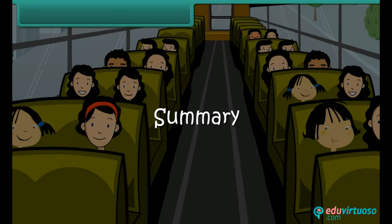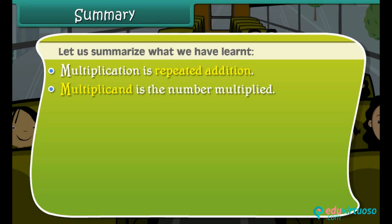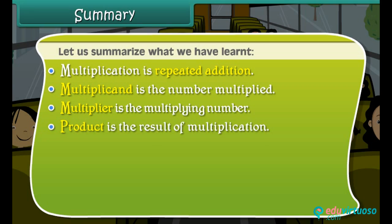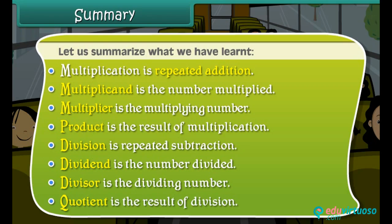Let us summarise what we have learnt. Multiplication is repeated addition. Multiplicand is the number multiplied, multiplier is the multiplying number, and product is the result of multiplication. Division is repeated subtraction. Dividend is the number divided, divisor is the dividing number, and quotient is the result of division.